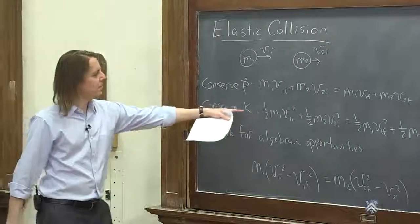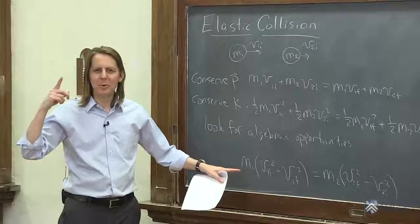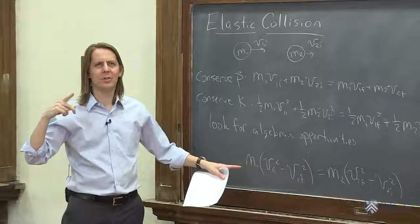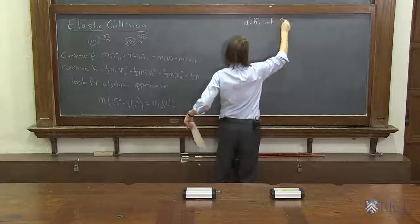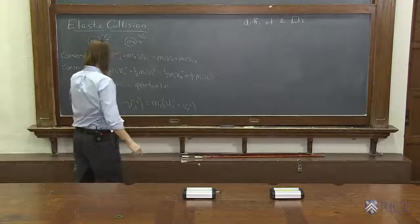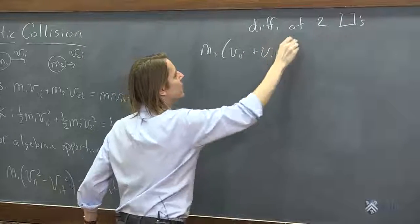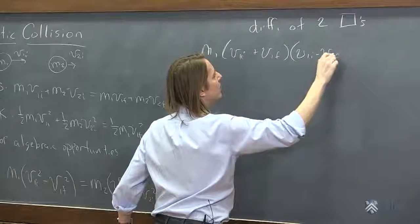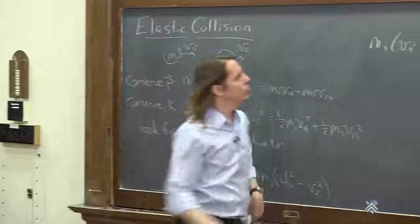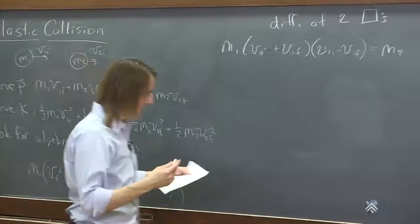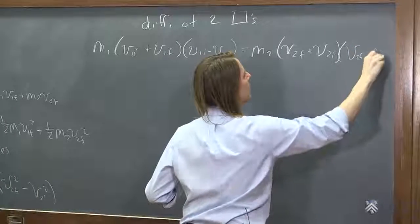We took our energy equation and wrote it grouped by masses. It still has squares, but notice it's the difference of two squares — which should sound familiar from junior high: A² minus B² equals (A+B)(A−B). Applying that, we get M1·(V1i + V1f)(V1i − V1f) on the left, and M2·(V2f + V2i)(V2f − V2i) on the right.